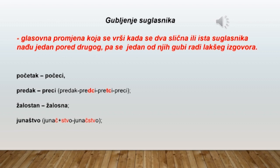Međutim u nominativu množine ova imenica glasi počeci. Isti je slučaj i sa imenicom predak u nominativu jednine, a nominativ množine glasi preci. Pridjev žalostan u muškom rodu glasi ovako: taj dječak je žalostan, ali ako ćemo ga upotrijebiti za ženski rod, reći ćemo: ta djevojčica je žalostna.